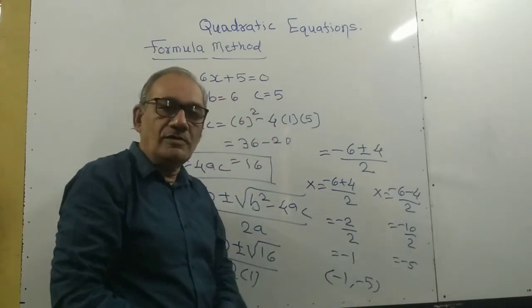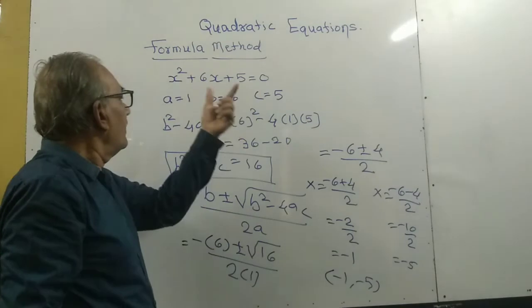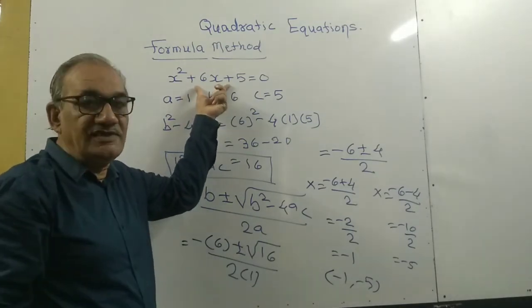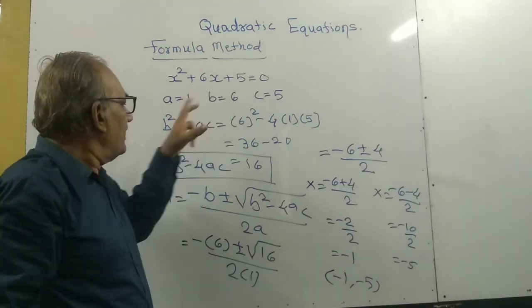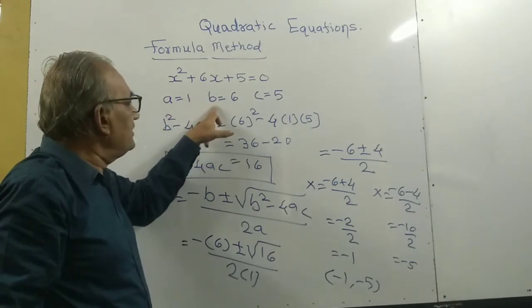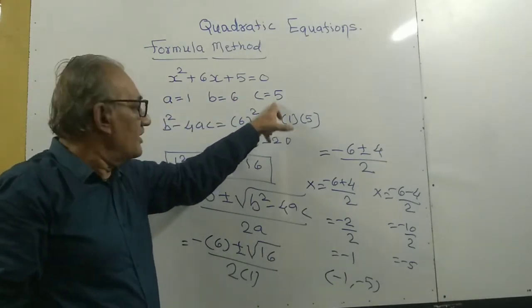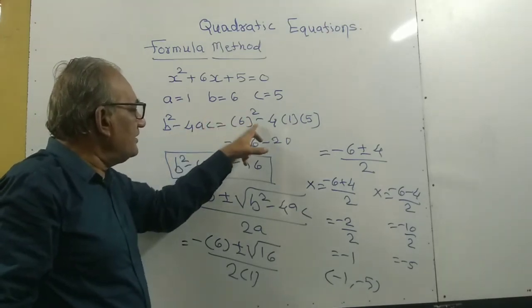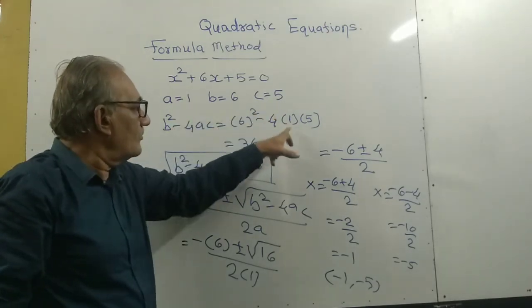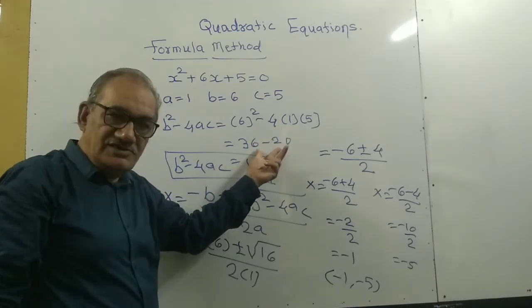Dear friends, please see. First of all, we have to identify the a, b, c values and their signs. Then calculate b² - 4ac value which equals 16.